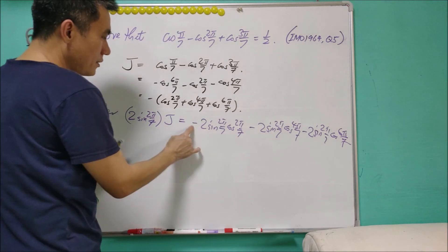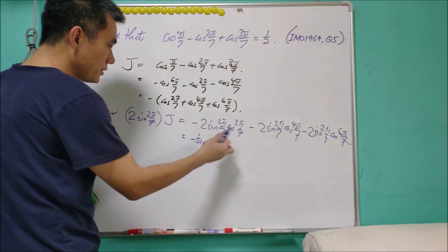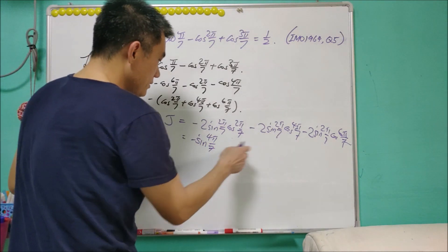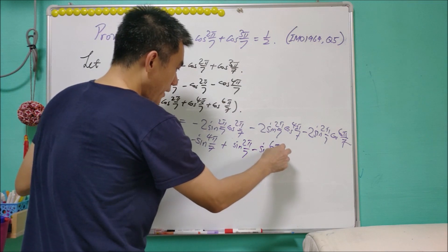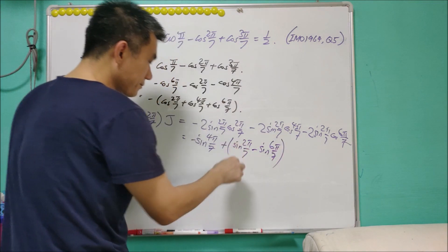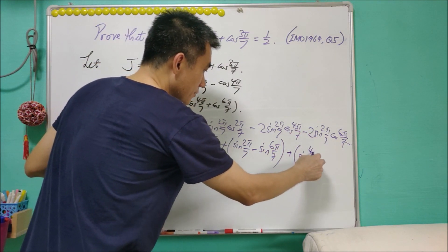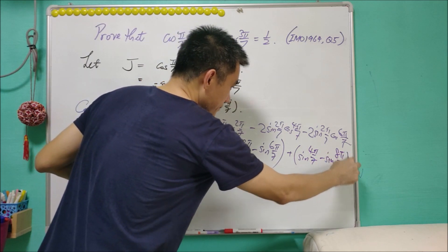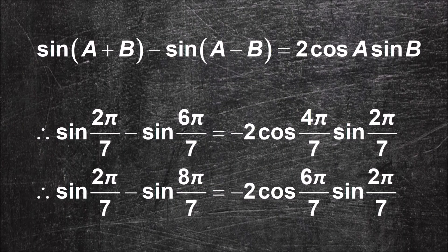For the first term, negative 2sin(2π/7)cos(2π/7) equals negative sin(4π/7). Applying the product-to-sum formula to each term, we get expressions involving sin(2π/7) minus sin(6π/7), plus sin(4π/7) minus sin(8π/7), and so on. Each conversion uses the formula 2sin(A)cos(B) = sin(A+B) + sin(A-B).